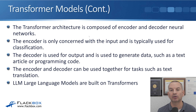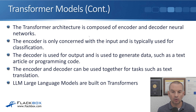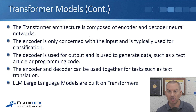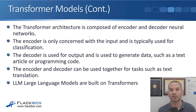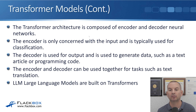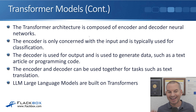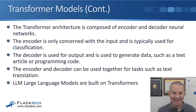The transformer architecture is composed of encoder and decoder neural networks. The encoder is only concerned with the input and is typically used for classification — for example, classifying images of different animals. The decoder is used for output and is used to generate data, such as a text article or programming code. The encoder and decoder can also be used together for tasks such as text translation from one language to another. LLMs — large language models — are built on transformers.